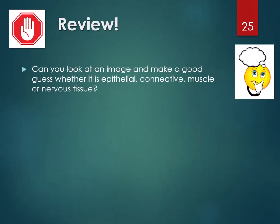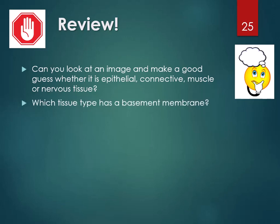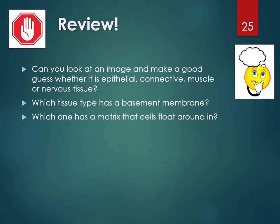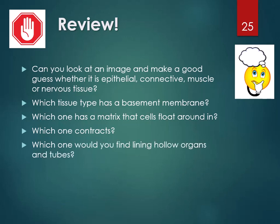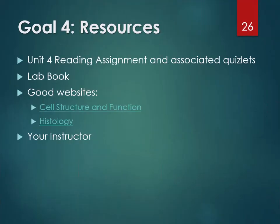To review: which tissue type has a basement membrane? Epithelial. Which has a matrix that cells float around in? Connective. Which tissue contracts? Muscle. Which lines hollow organs and tubes? Epithelial. Which includes cartilage? Connective. That covers Unit 4. Don't forget to do the reading assignment, check out the associated quizzes and Quizlets, and any other links in Canvas. You can always email with questions.